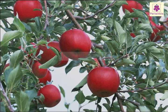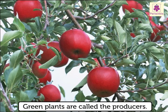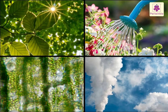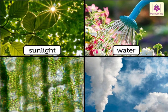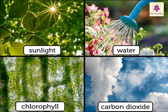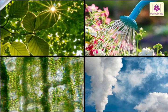The Producers: Green plants are called the Producers because they produce and provide food to all other living things who cannot produce their own food. They make their own food using the raw materials sunlight, water, carbon dioxide, and chlorophyll, which is present in their leaves. All of these are non-living elements.